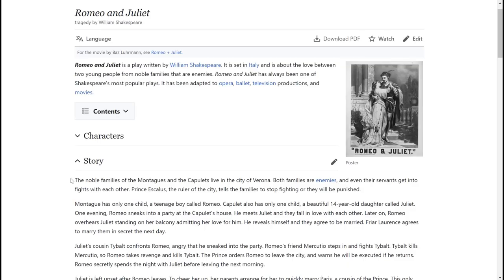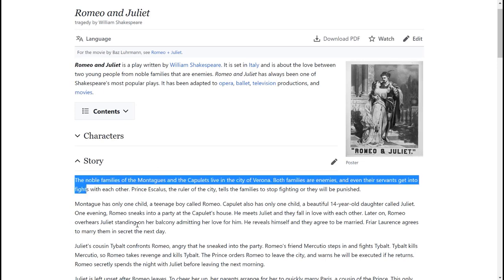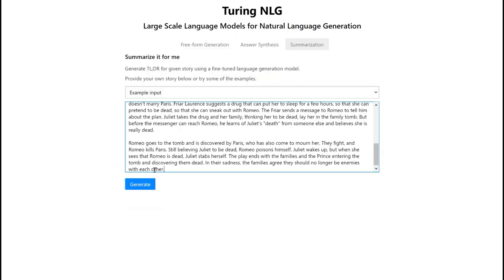Now, let's ask the model to do something different, to summarize content. Let's start with something that most are familiar with, the story of Romeo and Juliet, by copying it from Wikipedia and asking the model to generate a summary.